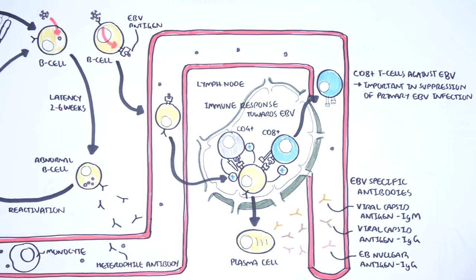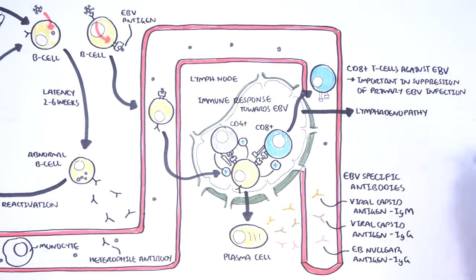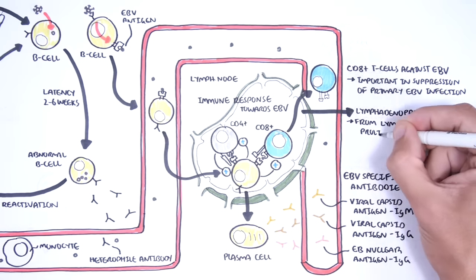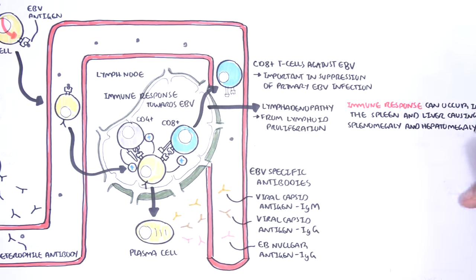A very important concept to understand is that a primary Epstein-Barr virus infection is typically asymptomatic. However, in some cases, the immune response to the infection can be so great that it causes symptoms of infectious mononucleosis. Epstein-Barr virus infection transitions from the oral cavity to the peripheral blood to other parts of the body, including the spleen, liver, and lymph nodes. In these sites, an immune response is mounted thanks to B cells and macrophages triggering CD8 and CD4 T cell responses, resulting in lymphadenopathy, splenomegaly, and hepatomegaly.